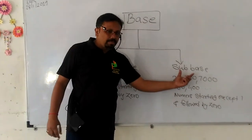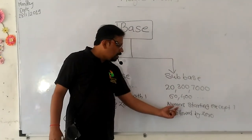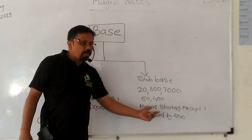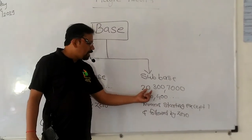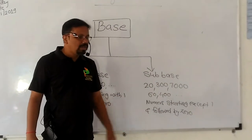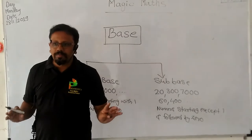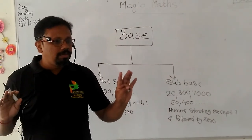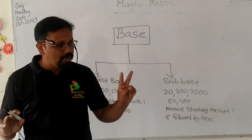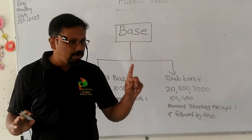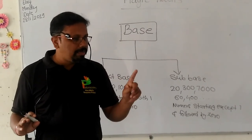And what is meant by SUBBASE? SUBBASE is the number starting except one and followed by zeroes — like 2300, 7060, 400, etc. So we learnt two bases: one is PERFECT BASE and another is SUBBASE.